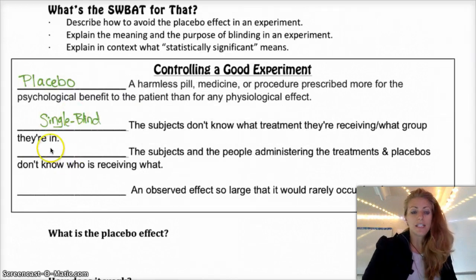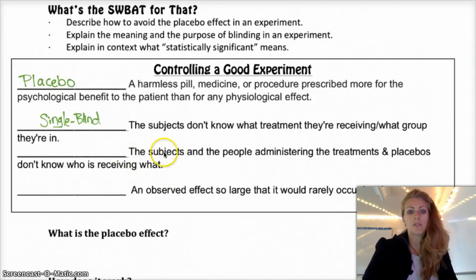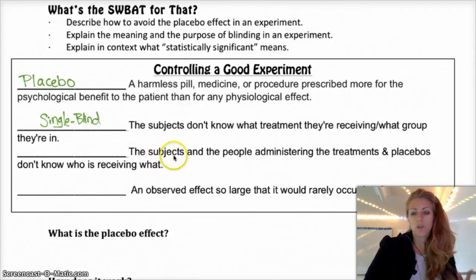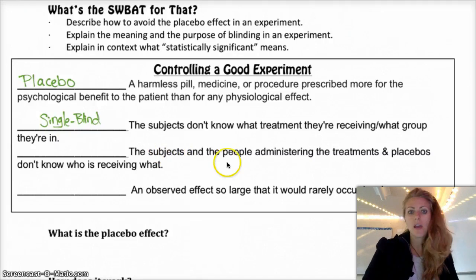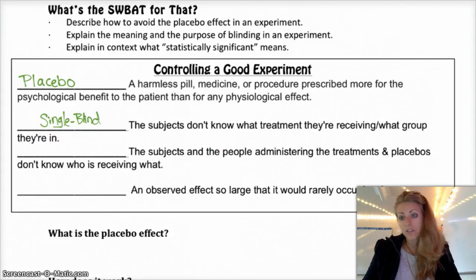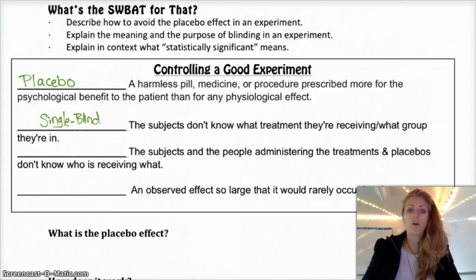You also have a double blind experiment. That is where both the subjects — the individuals in the experiment — don't know what they're getting, whether it's the treatment or the placebo. Also the people administering the treatment and potentially the people analyzing the results don't know which group has what.